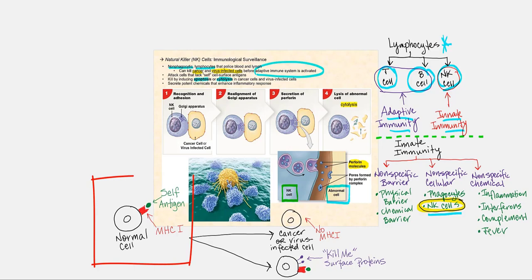Let's look at a normal cell. Our cells will display on a major histocompatibility complex one — details to come later — a self-antigen. A self-antigen is telling our immune cells: do not attack me, I am part of the same body, I am part of the same team.